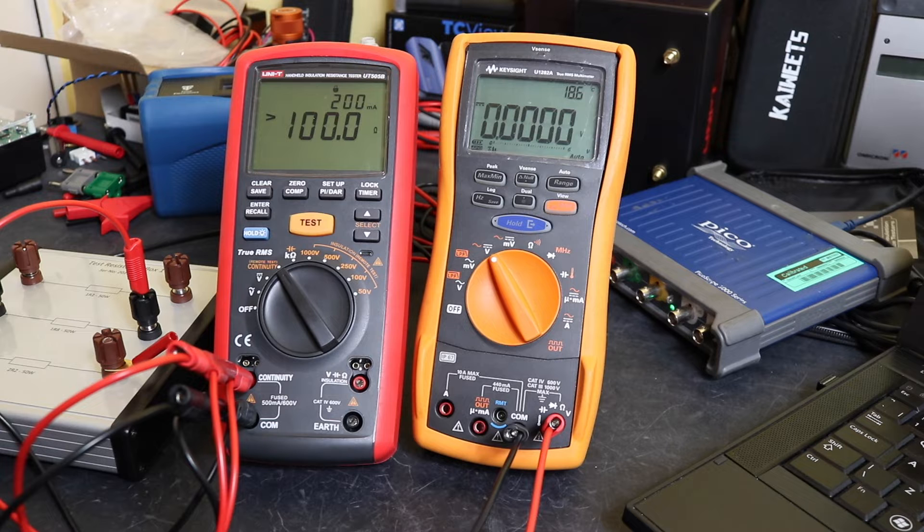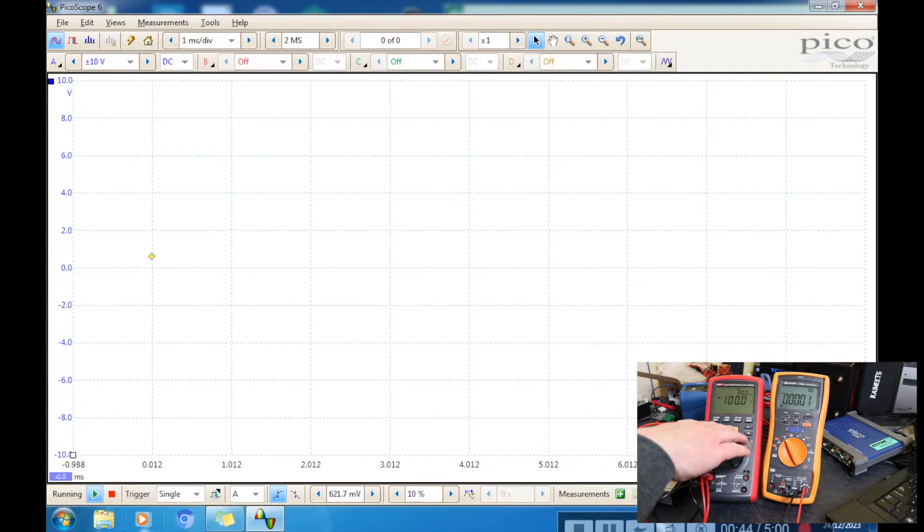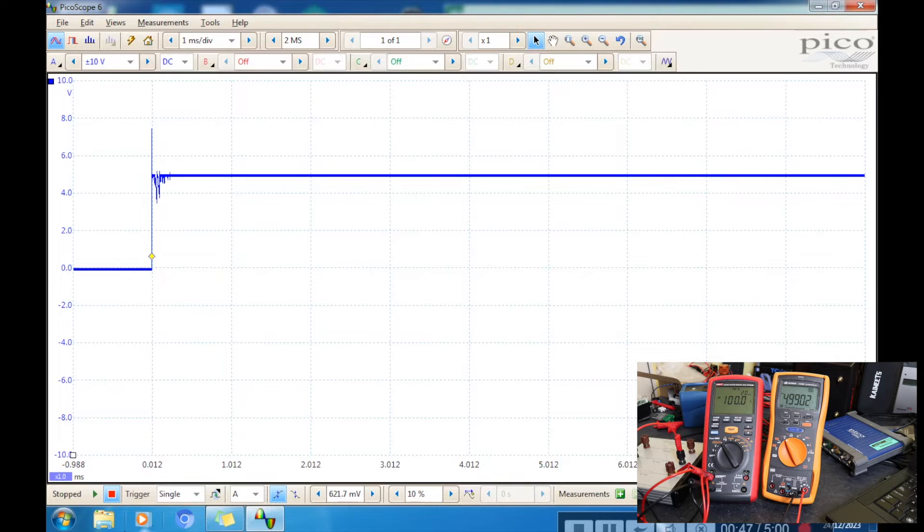I'll just run this test again so you can see the capture on the scope. We'll hit the go button and there you can see the scope has gone in there, and again 4.99 volts is running on the output, so that's all good.